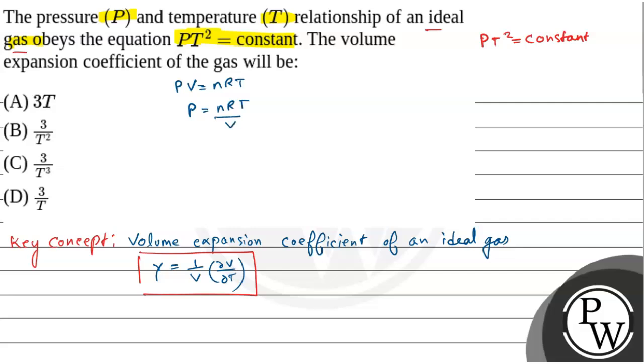In place of P, we put nRT by V. That means nRT by V into T² equals constant. So from here you can say that T³ equals some constant into V. So k is the constant.